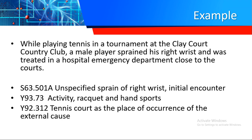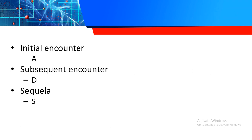Chapter 19 and Chapter 20 go hand in hand. Chapter 19 tells you all the conditions — traumatic injuries, poisoning, or accidents that happened to the patient — while Chapter 20 explains how, where, or why the patient suffered an injury. The seventh characters A, D, and S were further discussed in Chapter 13 when we covered recurrent or chronic bone conditions.